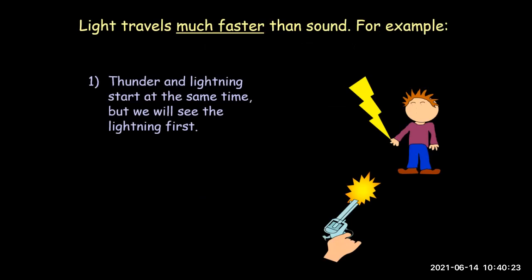The second property is that light travels much faster than sound. For example: thunder and lightning start at the same time, but we see the lightning first. During the monsoon season, we see lightning first and only after that we hear the sound of thunder — because light travels faster than sound.